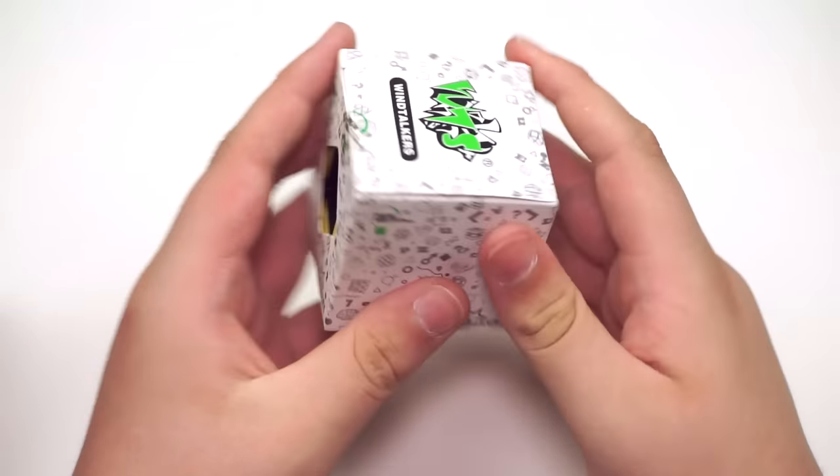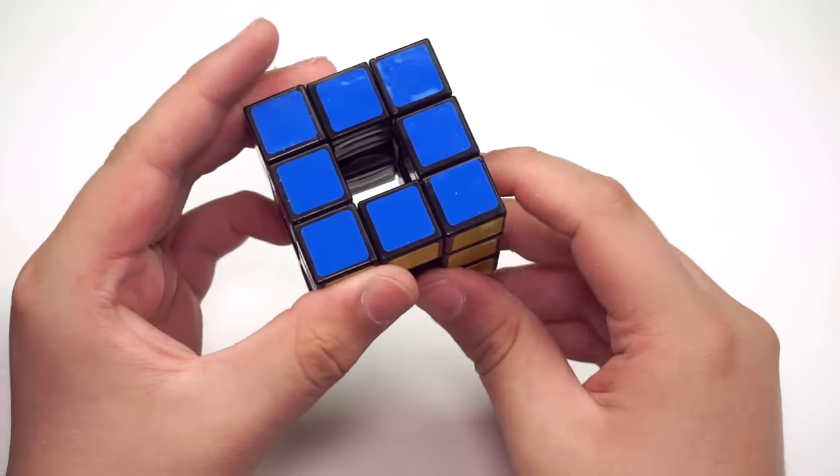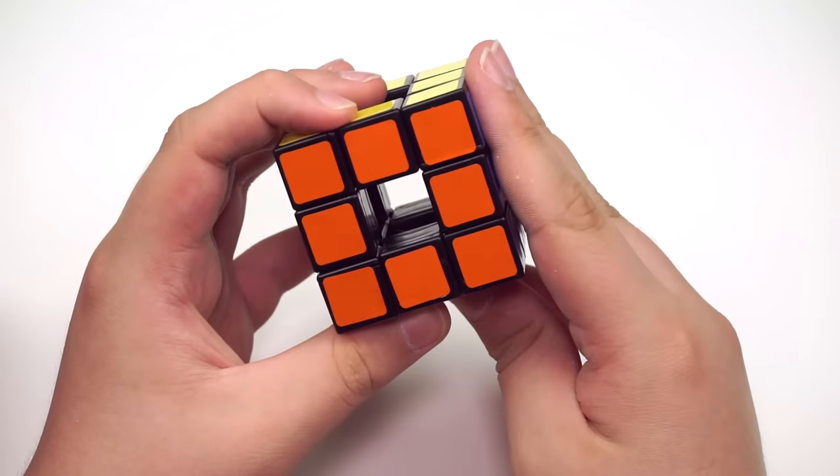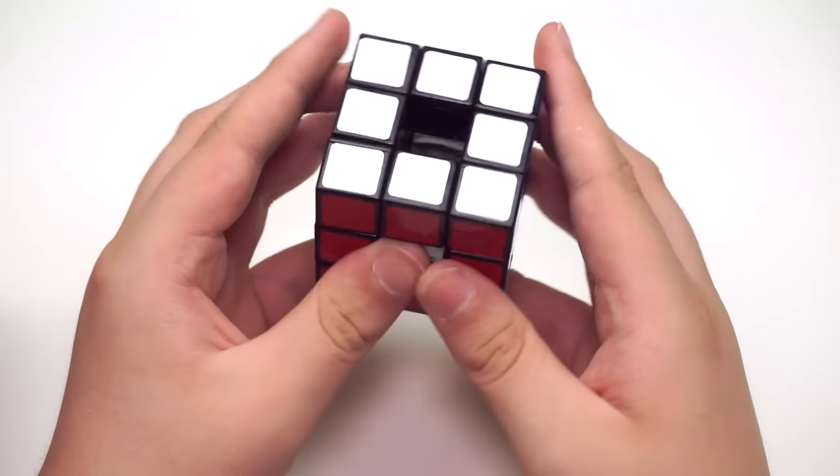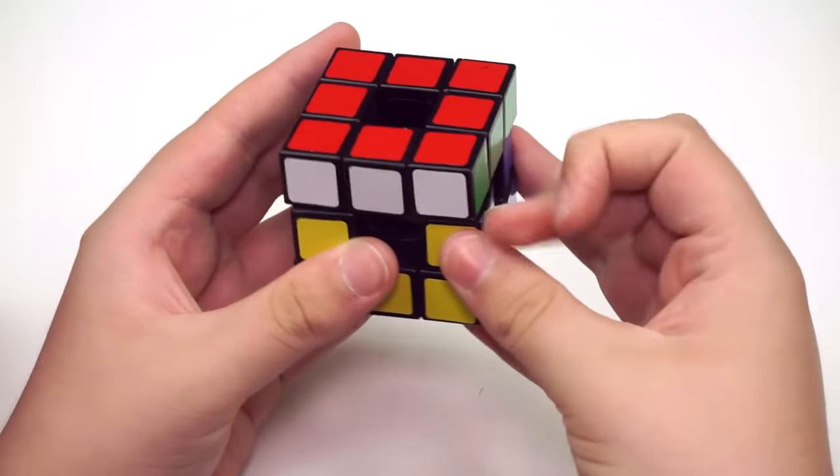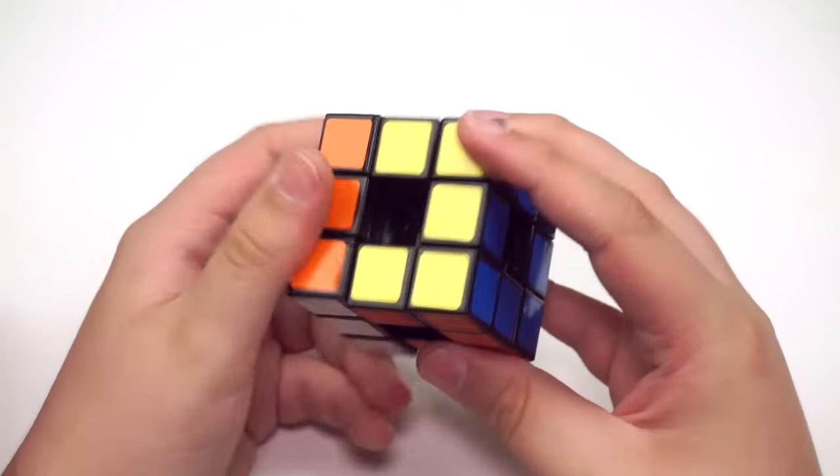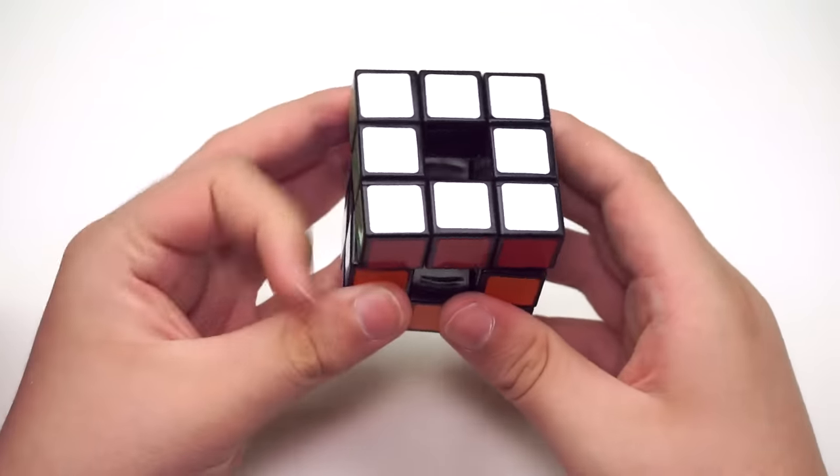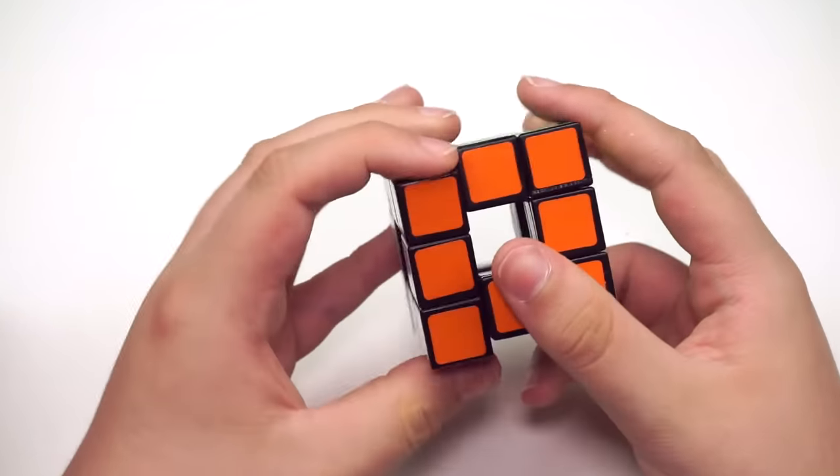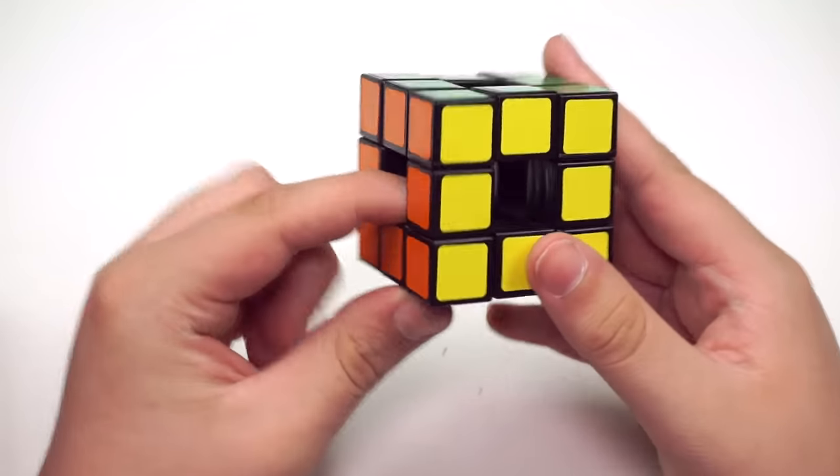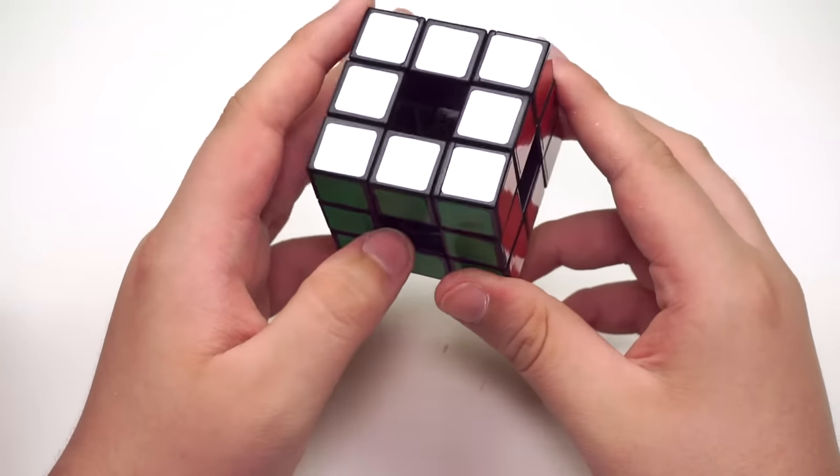Up next, we have the Lanlan Void Cube. This is another one that I used to have, but then sold. This actually has a normal color scheme, which I wasn't expecting. Normally, Lanlan Void Cubes have these very strange color schemes, but this one actually does have a normal color scheme, which I'm very happy about. Otherwise, I would have had to re-sticker it. This one is pretty okay as far as turning. It doesn't really turn any better than the Rubik's Void Cube, which is pretty much the exact same mechanism.